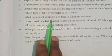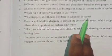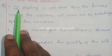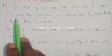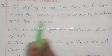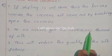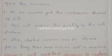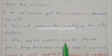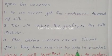What happens if stifling is not done to silk moth cocoons? If stifling is not done, then the larvae inside the cocoon will come out by breaking open the cocoons. So we cannot get the continuous thread of silk. This will reduce the quality of the silk fabric. Also, stifled cocoons can be stored for a long time and can be sold in the market.